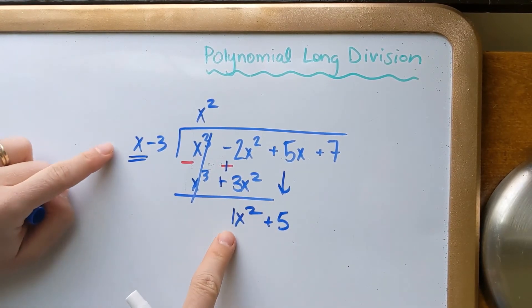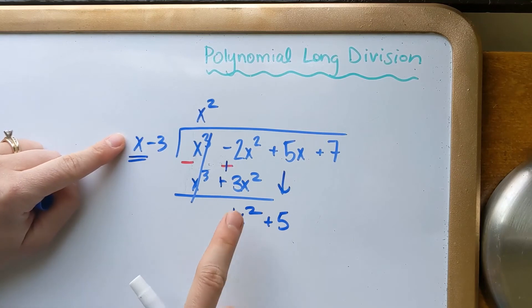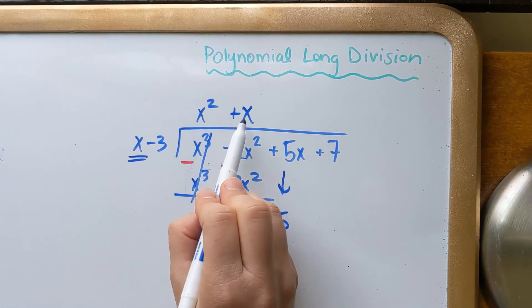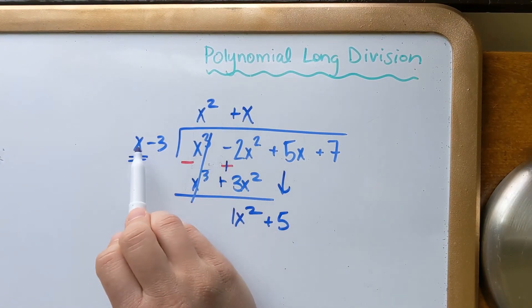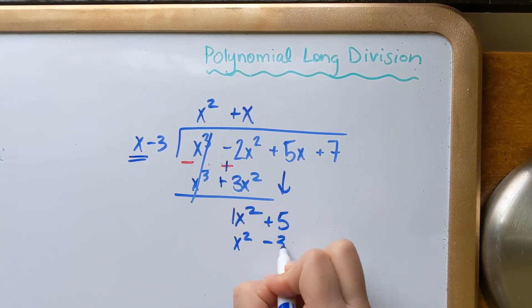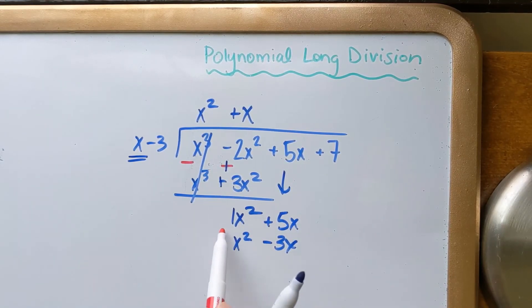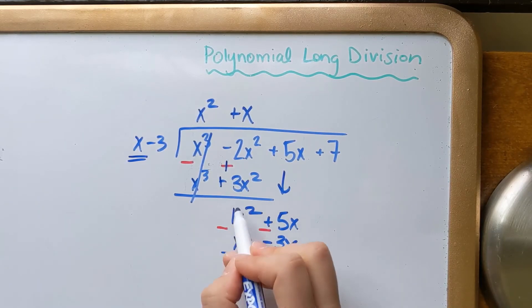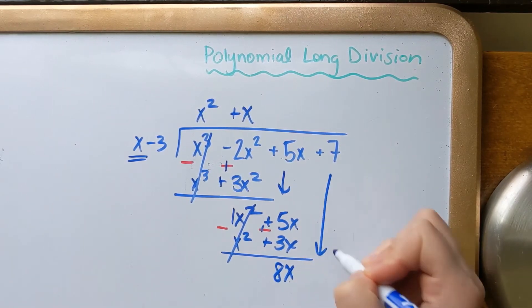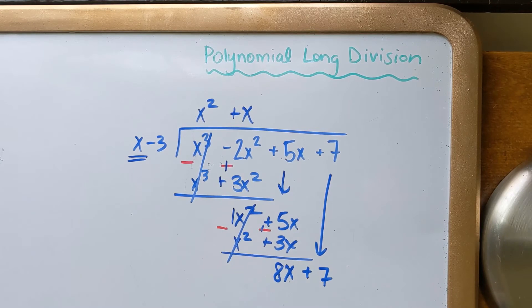So now I'm looking at these two terms. What do I multiply x by to get 1x squared? Well, just by x. And I'm going to redistribute this x. x times x is x squared. x times negative 3 is negative 3x. Oh, looks like I forgot my x. There we go. Okay. Subtracting. Again, notice you got a double negative. Be very careful. So x squared minus x squared. Double negative plus positive. 5x plus 3x is 8x. Drop down my 7.